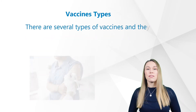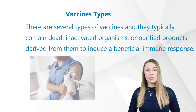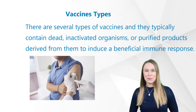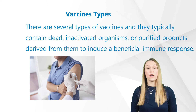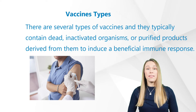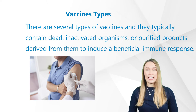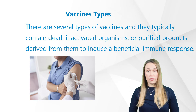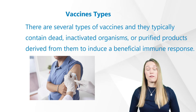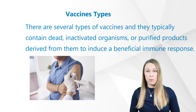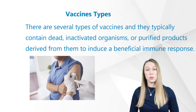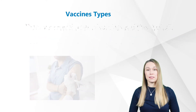So what different kinds of vaccines exist and why? Let's have a look. There are several types of vaccines in use today, and they typically contain dead, inactivated, or purified products derived from organisms. They all have one thing in common: they want to induce a beneficial immune response and reduce the risk of illness.